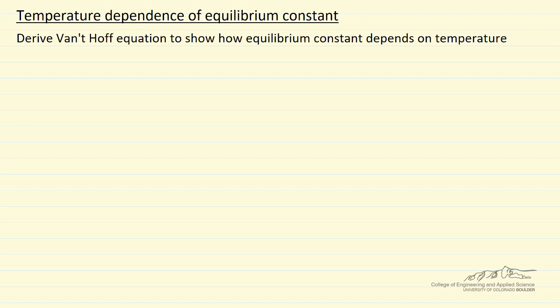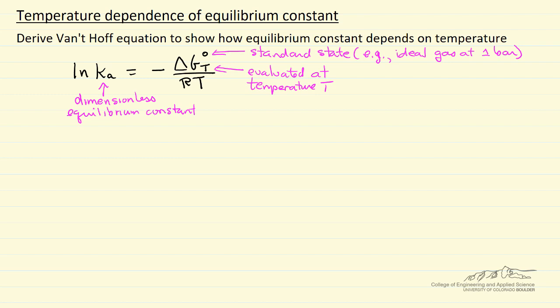We're interested in deriving the Van't Hoff equation that shows how the equilibrium constant for a chemical reaction depends on temperature. We want to start with the relation between the equilibrium constant Ka and the change in Gibbs free energy standard state over RT. We can see Ka depends on temperature because there's a temperature in the denominator and because delta G depends on temperature.